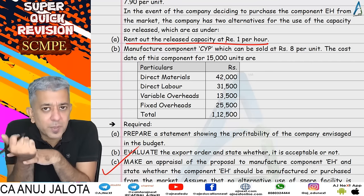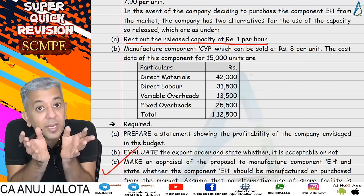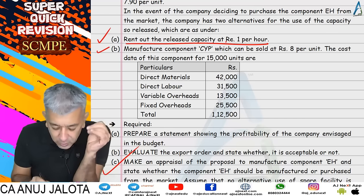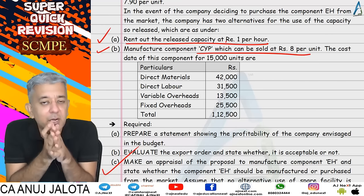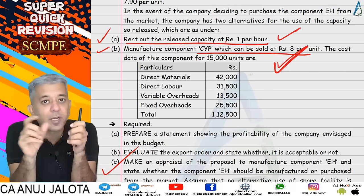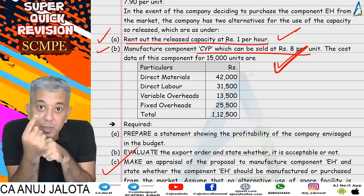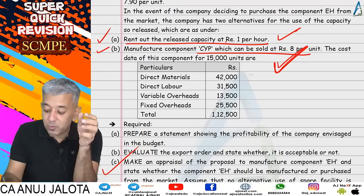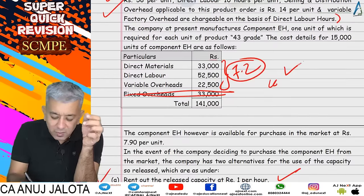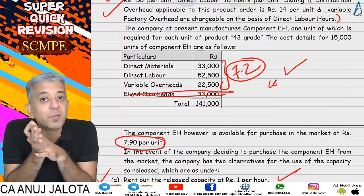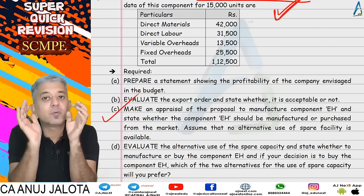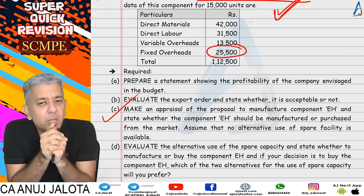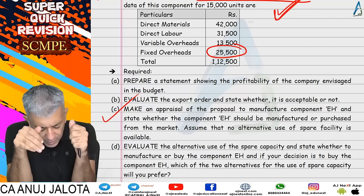Part D mein twist aaya: agar aap EH banate ho toh hours use honge; agar aap khareedhoge toh hours use nahi honge — matlab 90,000 hours free ho jaayenge. Woh jo hours free honge usme kuch aur kiya ja sakta tha — that was one positive factor if you manufacture. But if you manufacture, you incur 0.7 extra per unit — 7.2 jo idhar hai, 7.9 jo purchase cost hai — so 0.7 per unit extra. Hum logon ne net benefit nikala — that was 5,34,000. Ek assumption yeh maara ki jo fixed cost diya hua hai wo absorbed amount hoga, toh use consider nahi karenge. With that, our job was altogether done.